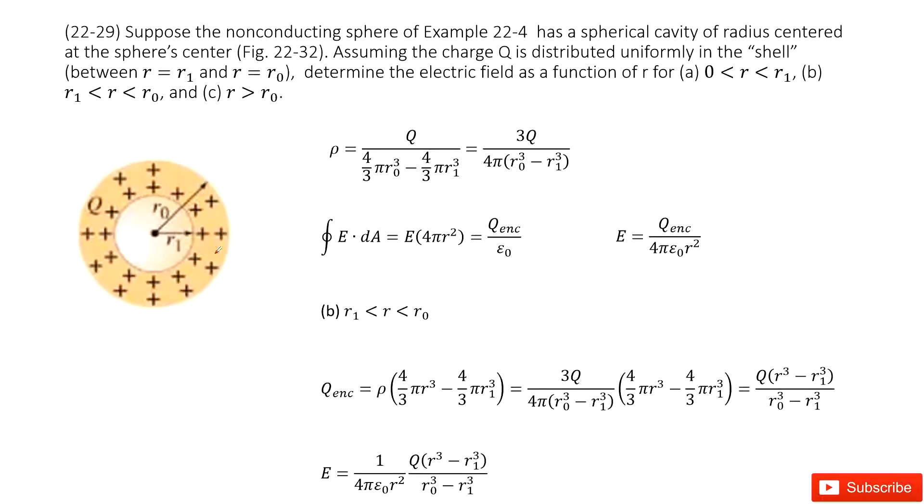The second one: if the location is larger than R₁, smaller than R₀, in this case we can still draw a Gaussian surface. Look like this one. And then we need to apply Gauss's law. Gauss's law tells us the electric field is equal to this function.